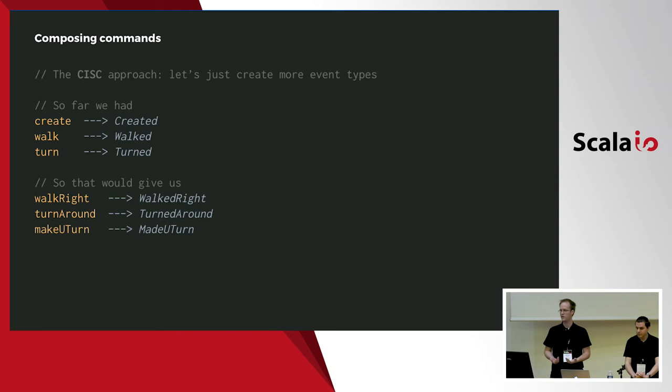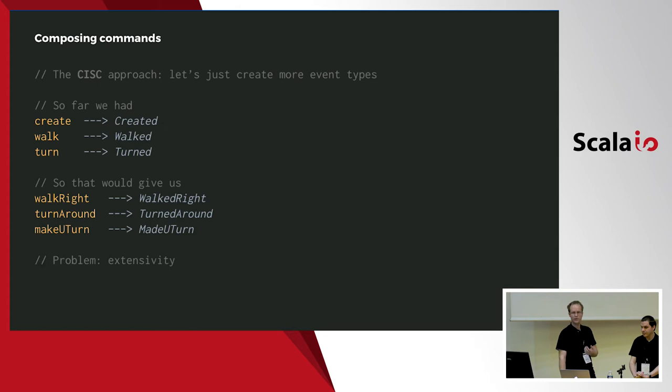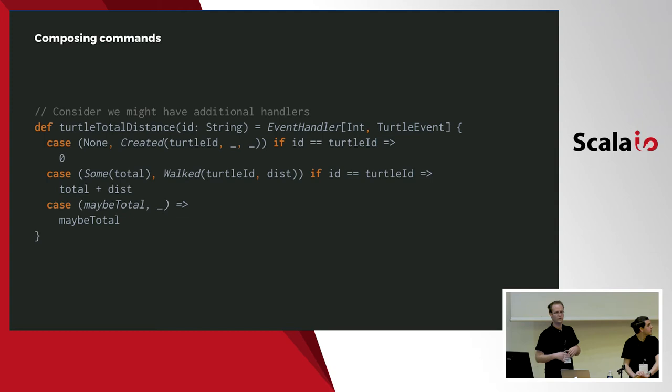The first approach would be to define as many kinds of events as we have commands. So we introduce a walked-right event. But this is not extensible. Imagine you define another handler that computes the total distance a turtle has traveled. What happens when we define new kinds of events? Every time we define a new kind of event that has anything to do with distance, it forces us to update that handler to handle all the new cases.